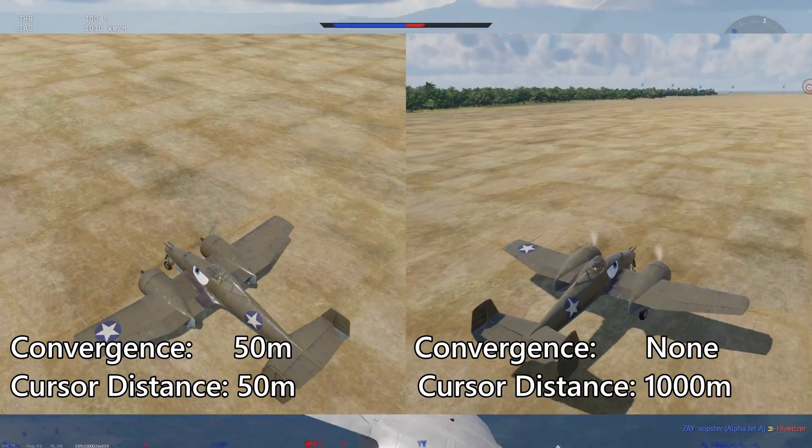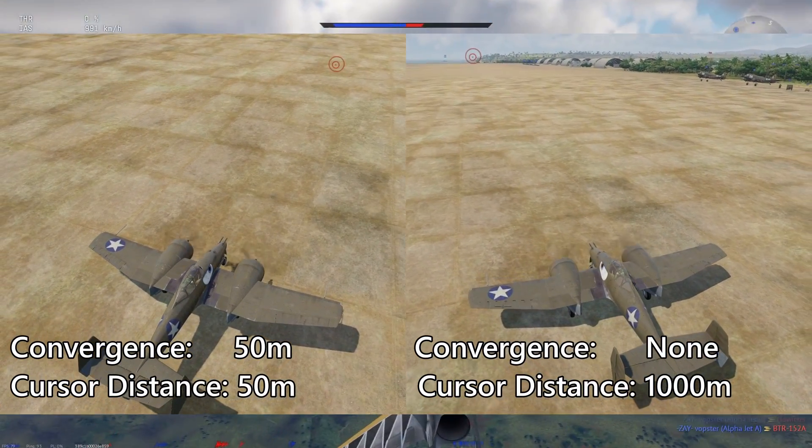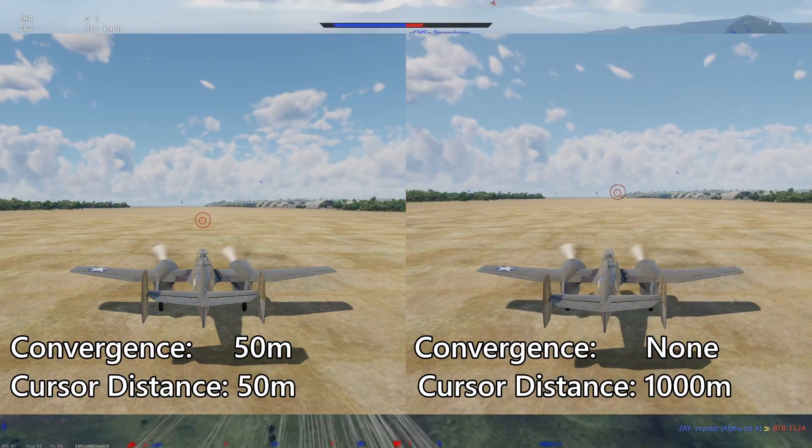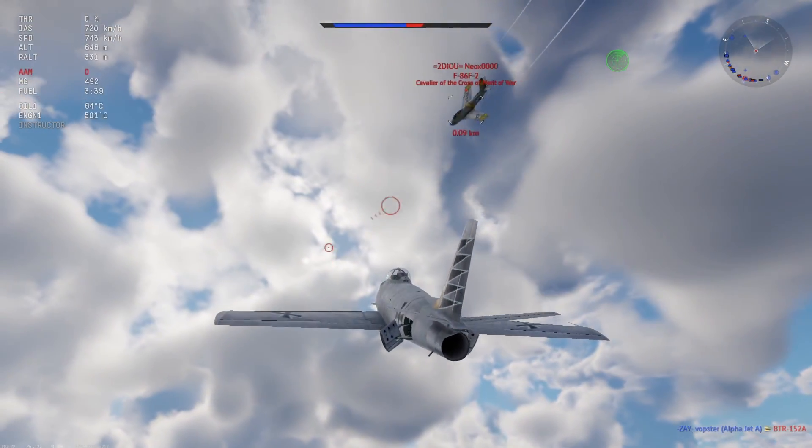You can see this pretty clearly when you've set your gun convergence to 50 meters, where the position of your cursor is visibly closer to the plane. When you have your convergence set to no, the mouse cursor is set at 1000 meters away.